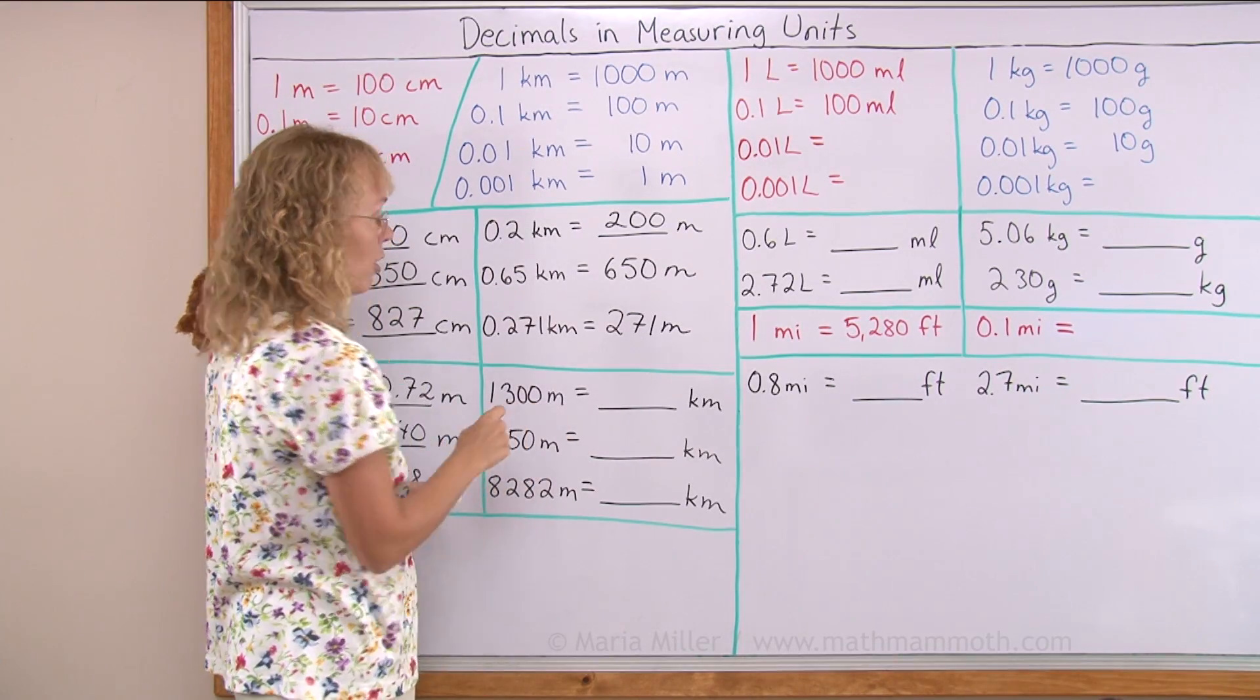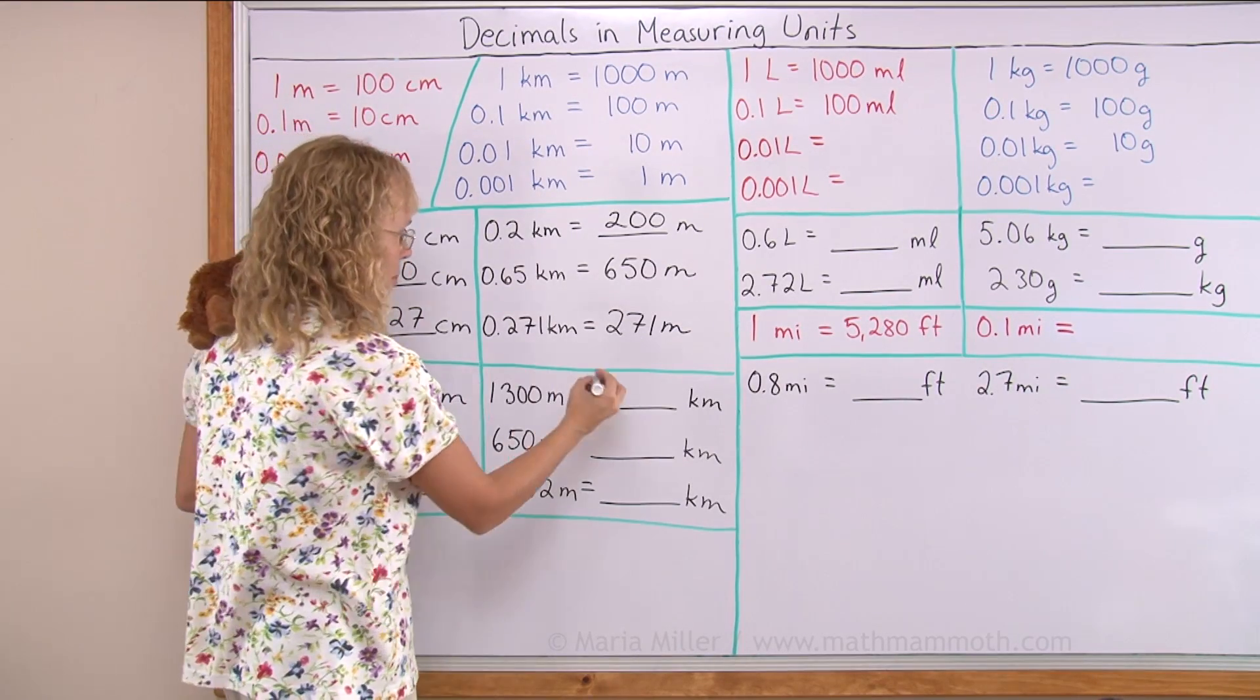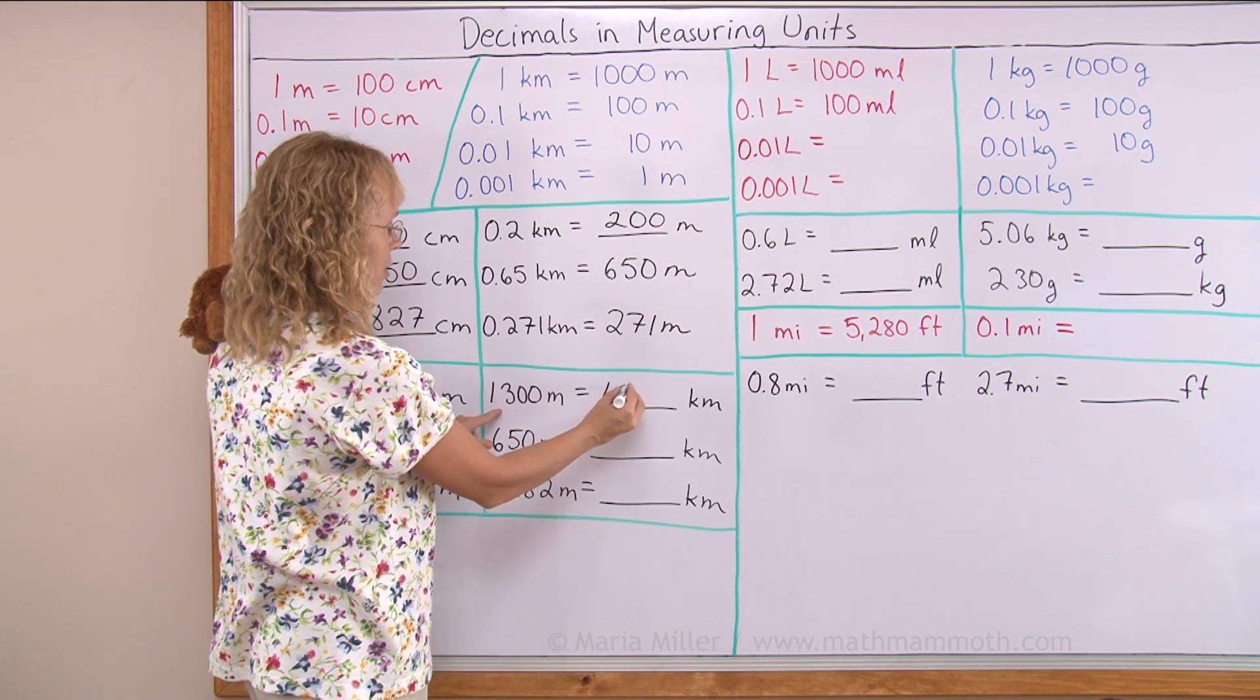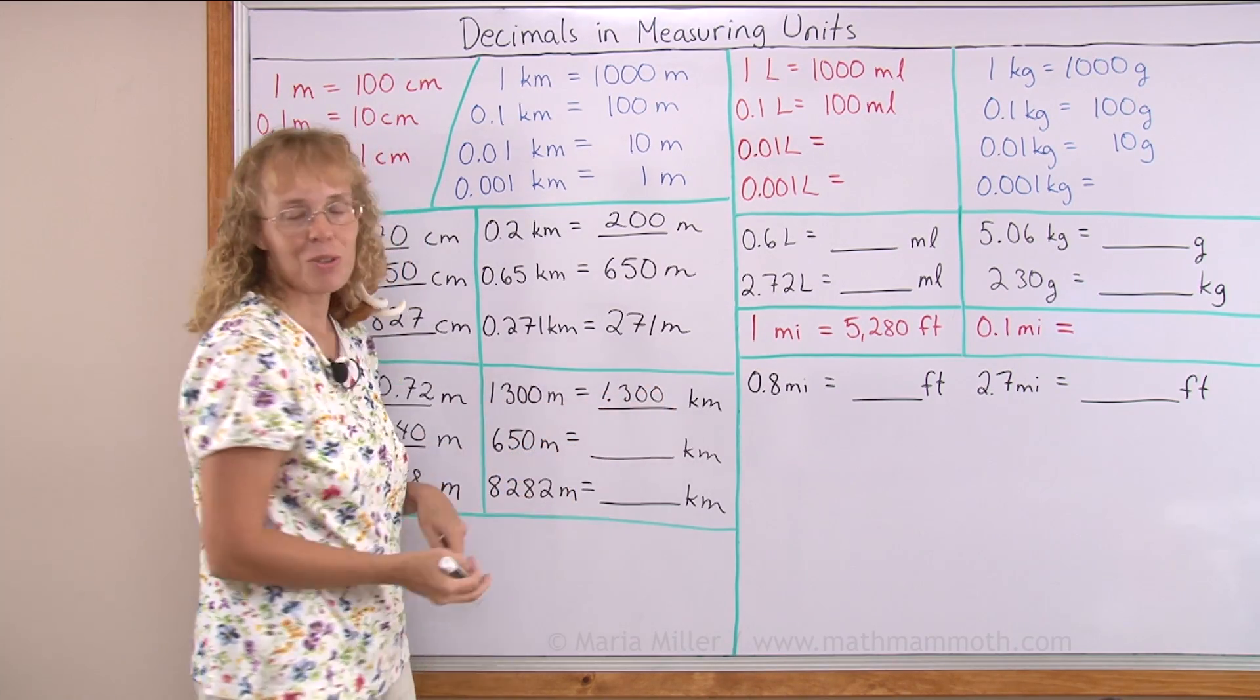Here, 1,300 meters. That's more than one kilometer, right? Because the thousand makes one. And then you have your point. And then the rest of the digits follow. So that's easy.